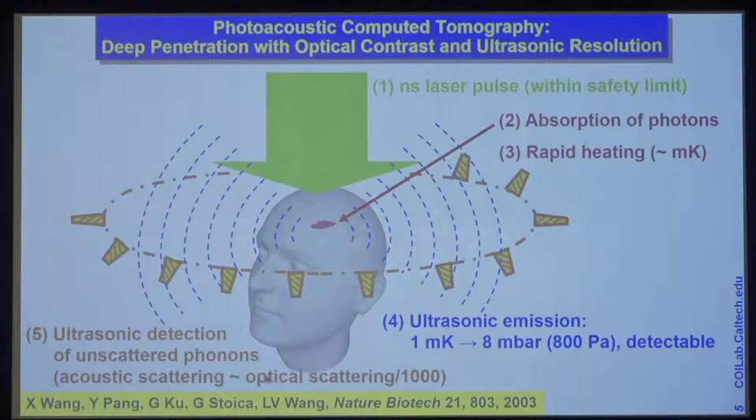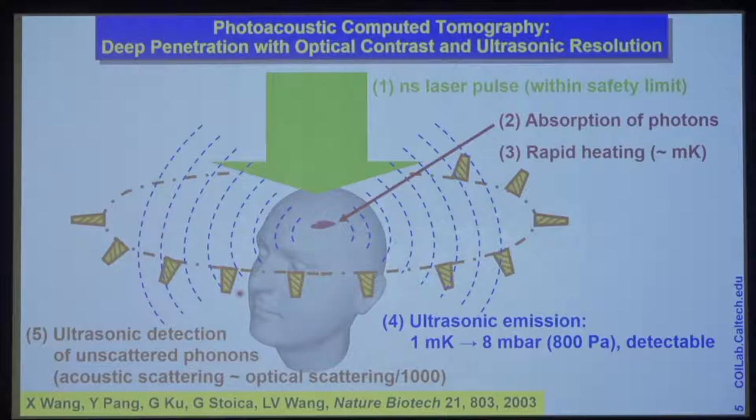You do have to run inverse problems to form an image, very similar to X-ray CT. Here we deal with an inverse spherical Radon transform, except we deal with an extra dimension because this inverse transform is a spherical shell — a curved surface. So it's a bit more complex than standard X-ray CT.